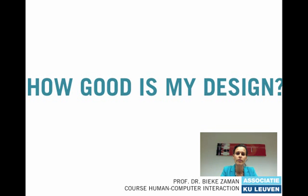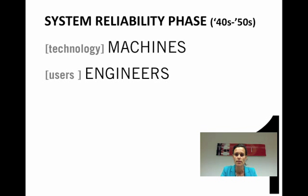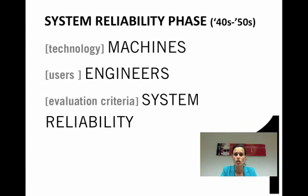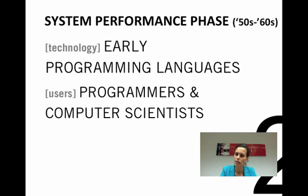Let us first go back to the 40s and 50s. At that time computers were large machines, primarily used to perform complex calculations. These machines were considered as good when they were reliable, meaning that engineers could minimize system fault time and quickly repair errors. In the 50s and 60s, the advent of early programming languages promised significantly more power and flexibility. Computer systems became increasingly more stable and reliable, and consequently the evaluation emphasis shifted from the system's reliability to how quickly it would perform — the so-called system performance. At that time a good product was typically perceived as a product with high processing speeds.